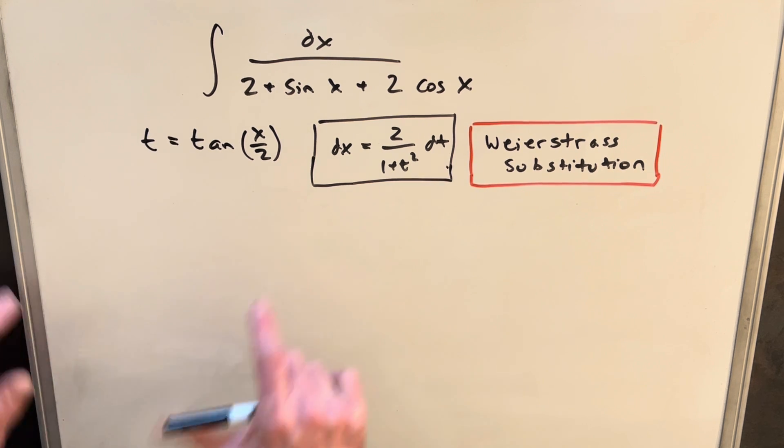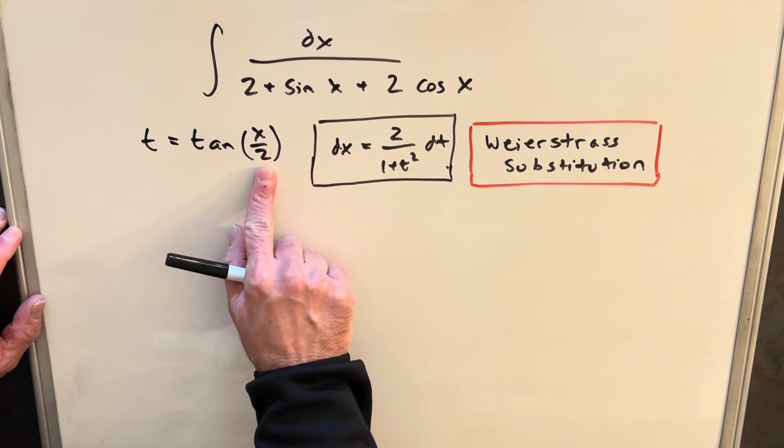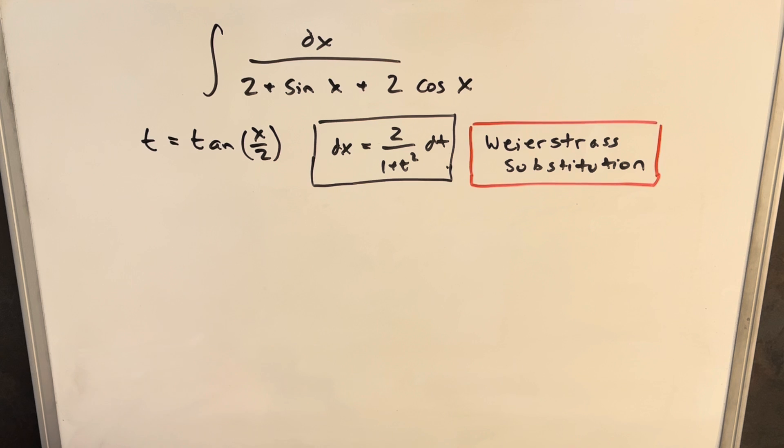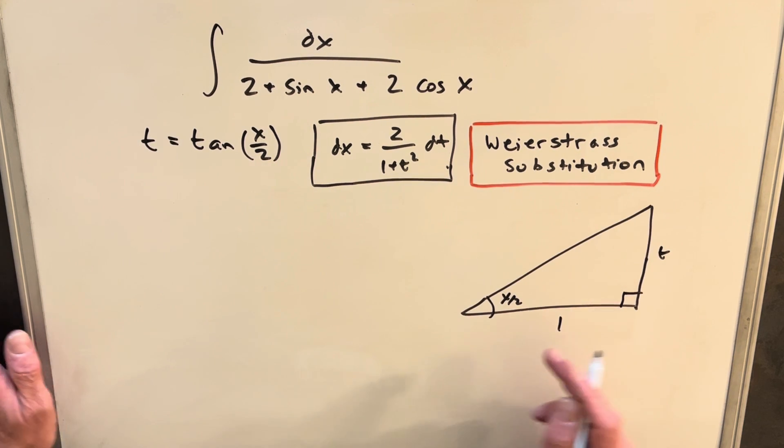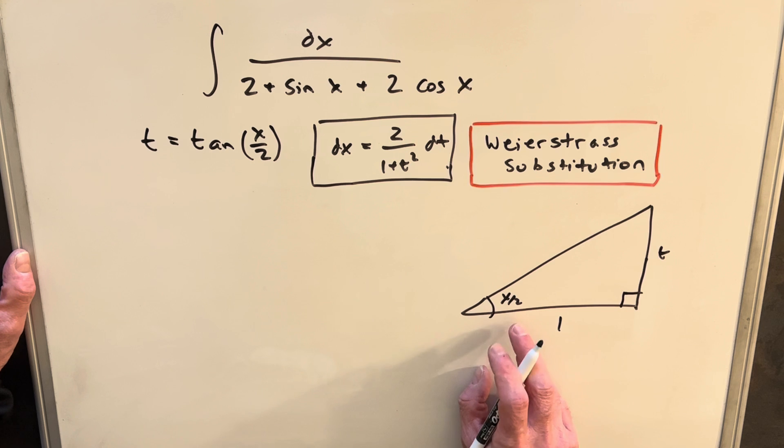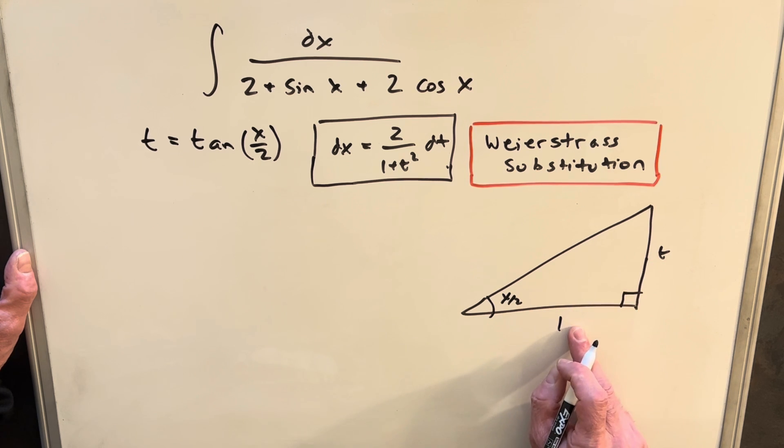Now what about the fact we need something for sine and cosine, but we also need to get rid of this half angle. So what we can do is draw a right triangle where the angle we're looking at is going to be x over 2. And then if that's the case, our opposite over adjacent is just going to be t over 1, which is the same thing as t.